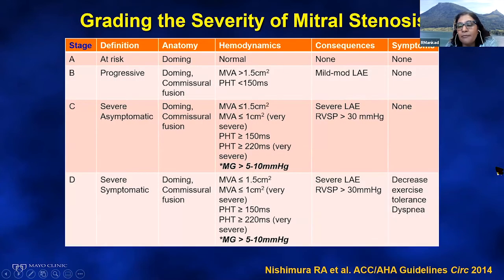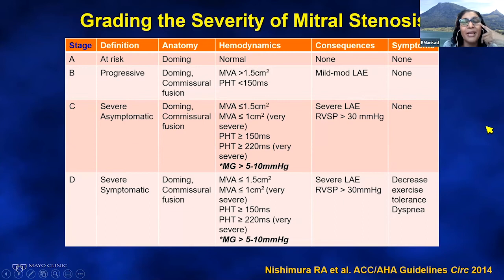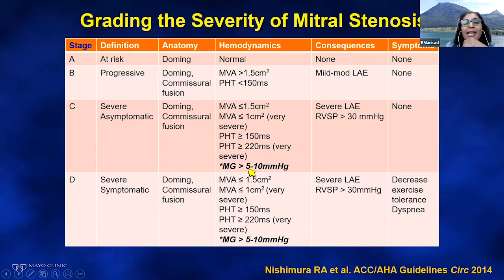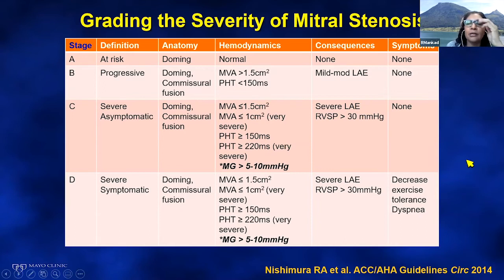Per current valve guidelines on severity: a mitral valve area of ≤1.5 cm² constitutes severe mitral stenosis — it used to be less than 1 cm², which is now classified as very severe. Typical gradients in severe MS range from 5 to 10 mmHg or even higher. You'll see left atrial enlargement and right ventricular systolic pressure typically over 30 mmHg. Importantly, valve area dictates severity — not the gradient.